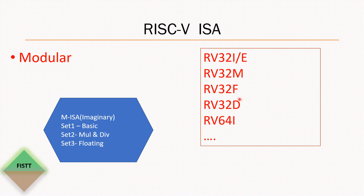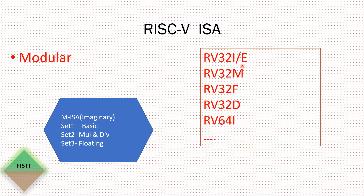There is also another variant of the basic instruction set — 'E', which stands for embedded and is intended for embedded applications. The only difference between the I variant and the E variant is that the E variant has 16 general purpose registers, whereas the I variant has 32 general purpose registers. That covers the modularity of the RISC-V ISA.